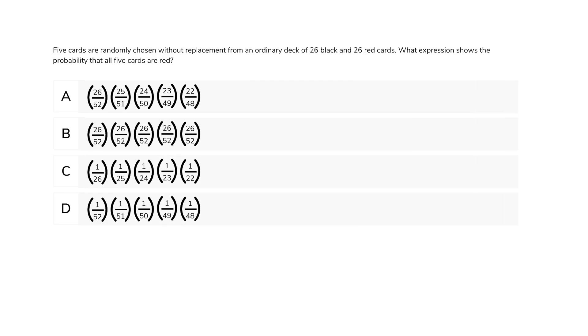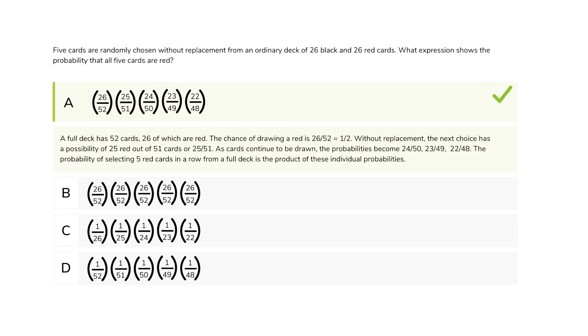How about a probability question? What do those look like? Five cards are randomly chosen without replacement from an ordinary deck of 26 black and 26 red cards. What expression shows the probability that all five cards are red? The first time we pull a card, we have a 26 out of 52 chance of it being red. So, right away we can eliminate choices C and D. When we go to pull our second card, the number of red cards and total cards in the deck has decreased. So, now we have a 25 out of 51 chance of pulling a red card. Choice A is correct.